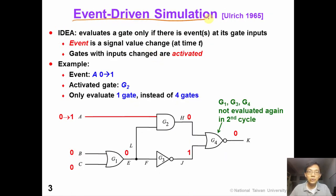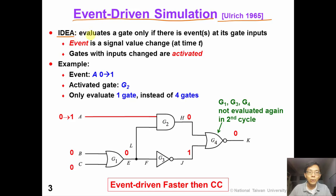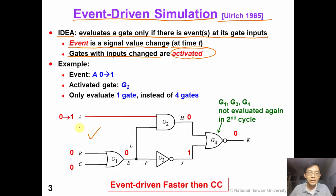The event-driven simulation was proposed by Ulrich in 1965. The idea is pretty simple: we evaluate a gate only if there is an event at its gate input. In this way, we can save a lot of CPU time. An event is a signal value change at a specific time T. And a gate with its input change is called activated. For example, for this circuit A,